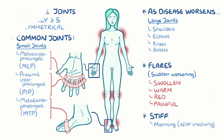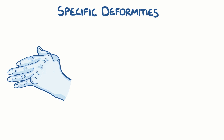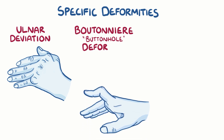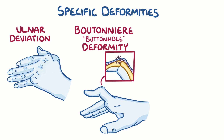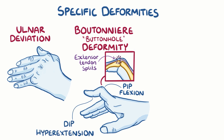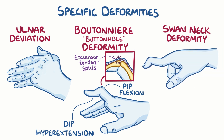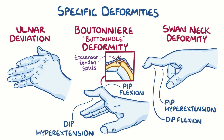People with rheumatoid arthritis may develop specific deformities, usually of the metacarpophalangeal joints of the hand, such as ulnar deviation of the fingers. Deformities are also common in the interphalangeal joints, such as the boutonniere or buttonhole deformity. This occurs when the extensor tendon in the back of the finger splits and the head of the proximal phalanx pokes through like a button through a buttonhole, causing flexion of the proximal interphalangeal joint and hyperextension of the distal interphalangeal joint. Another deformity is the swan neck deformity, which is the opposite: hyperextension of the proximal interphalangeal joint and flexion of the distal interphalangeal joint.